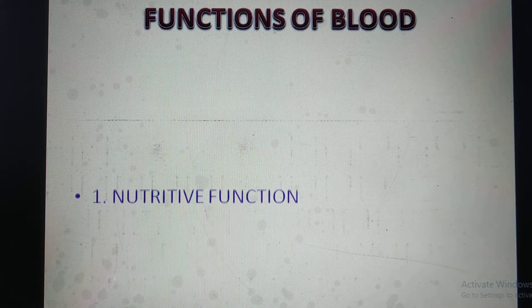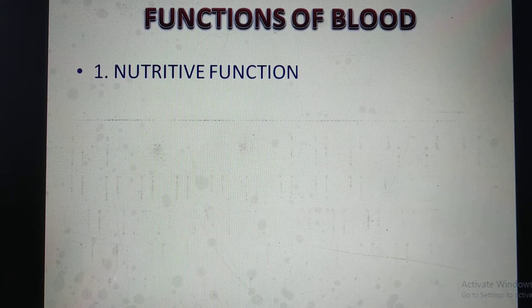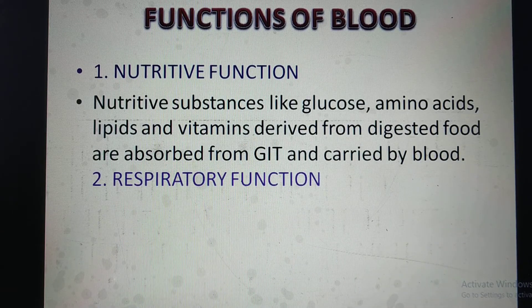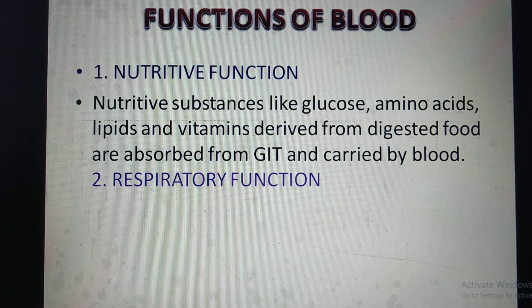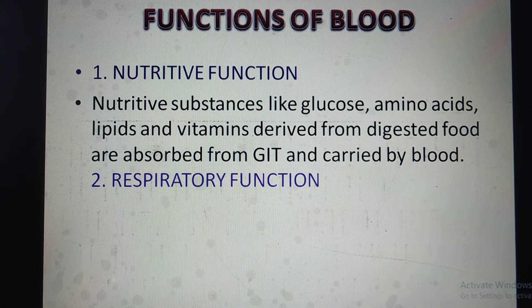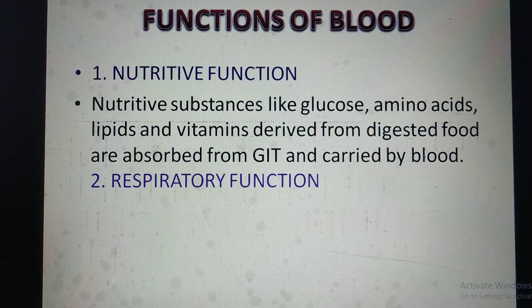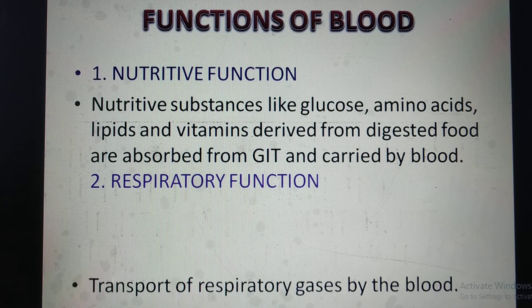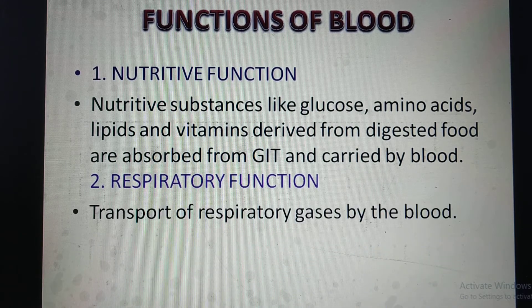Functions of blood. First function: nutritive function. Nutrients like glucose, amino acids, lipids, and vitamins derived from digested food are absorbed from the GIT (gastrointestinal tract) and carried by blood. Second function: respiratory function — transport of respiratory gases by the blood.